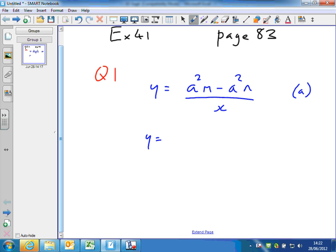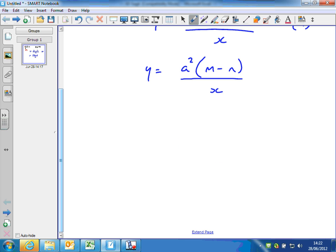So if I factorise, I get A squared into M minus N, all over X. I could have multiplied both sides by X first and then factorised, but you would get to the same place.